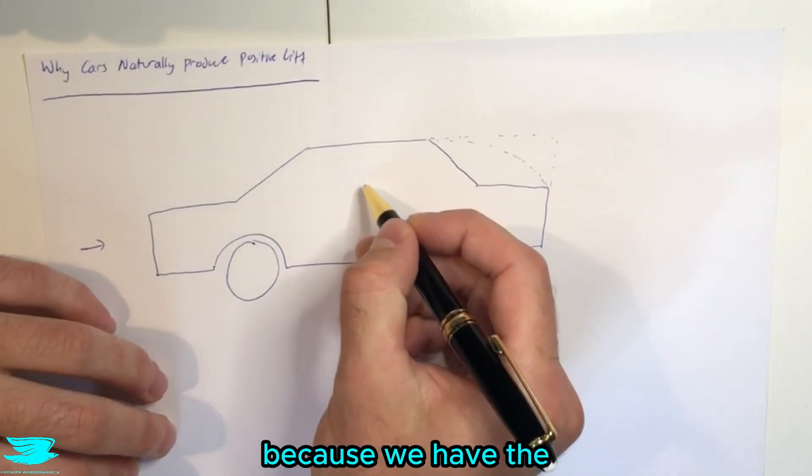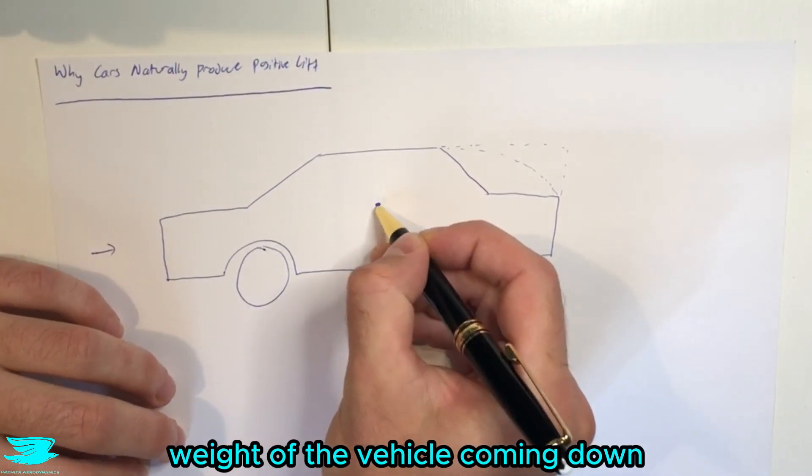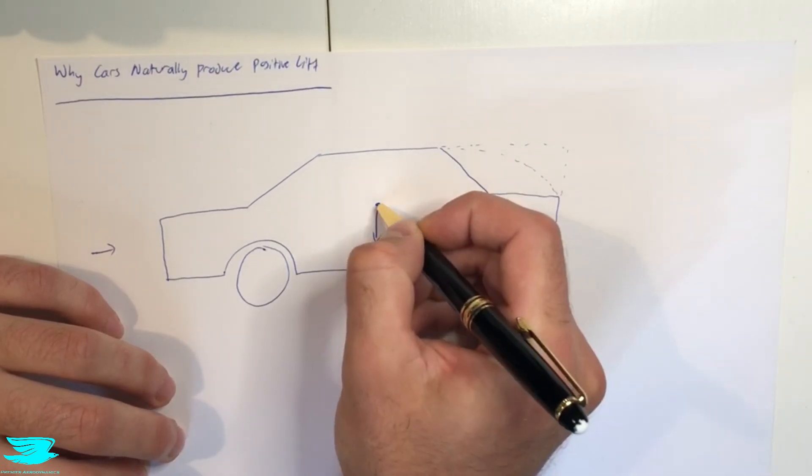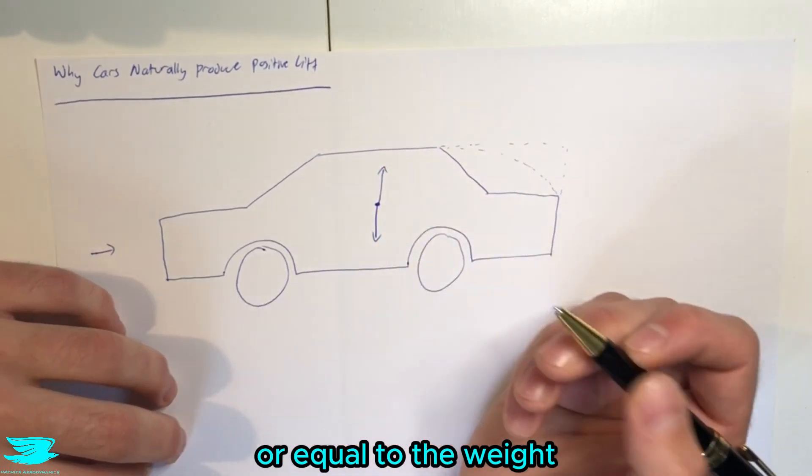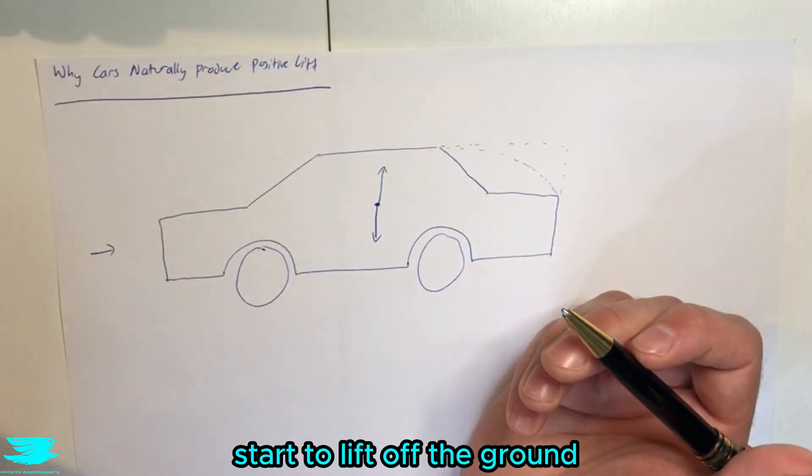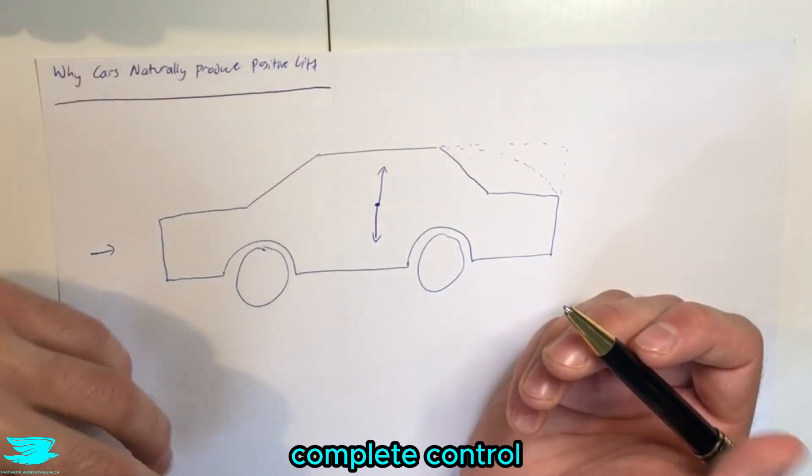The reason why is because we have the weight of the vehicle coming down. But if the lift of the vehicle is greater or equal to the weight, then obviously it will start to lift off the ground. And that is when we start to lose complete control.